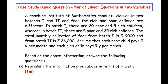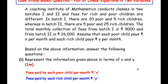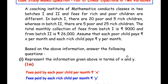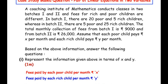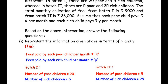Let us begin by writing down the data. The fees paid by each poor child per month is rupees x and the fees paid by each rich child per month is rupees y. In batch 1 the number of poor children is 20 and the number of rich children is 5. In batch 2 the number of poor children is 5 and the number of rich children is 25.